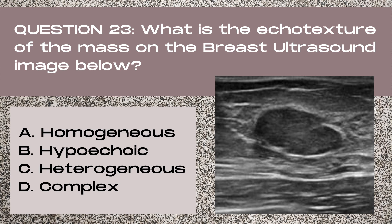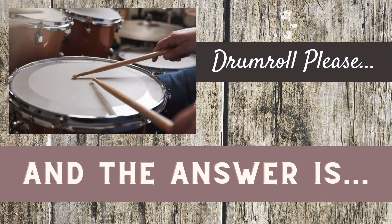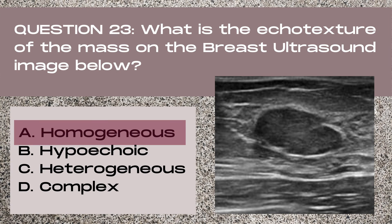Question 23. What is the echo texture of the mass on the breast ultrasound image below? A. Homogenous, B. Hypoechoic, C. Heterogeneous, or D. Complex. And the answer is A. Homogenous. This mass has an even pattern of brightness levels within the mass, giving it an even or homogenous echo texture. If you look at the echogenicity or the brightness level of this mass, it is hypoechoic.